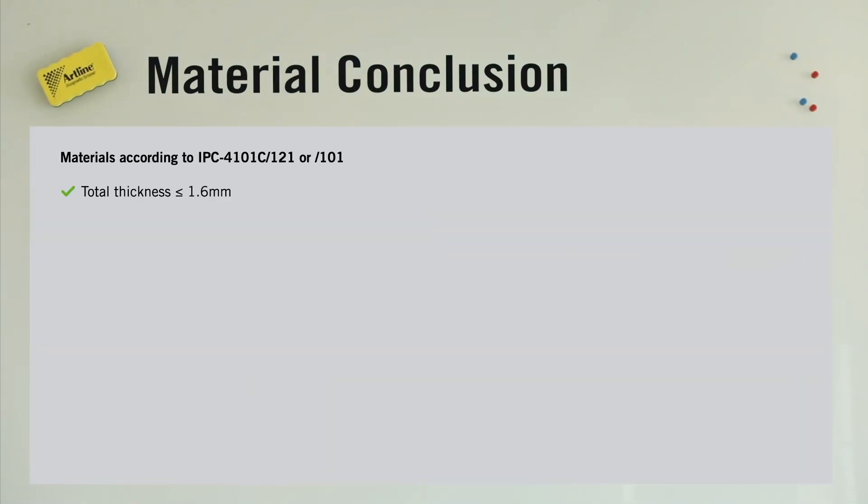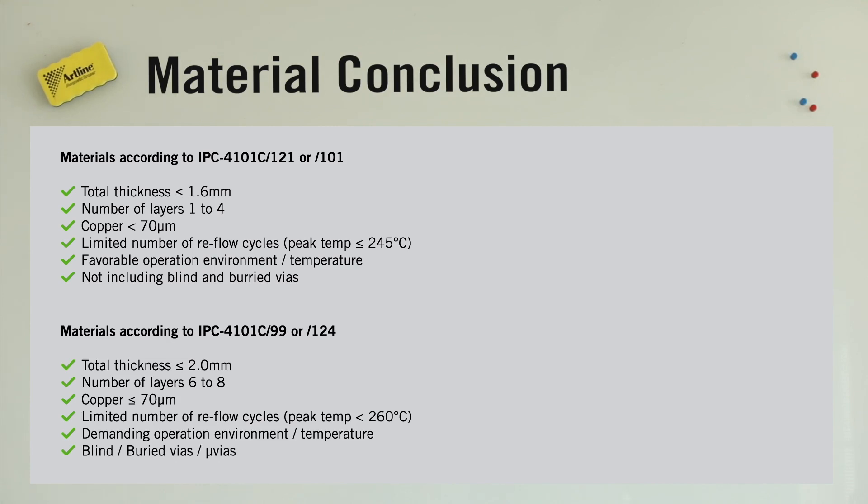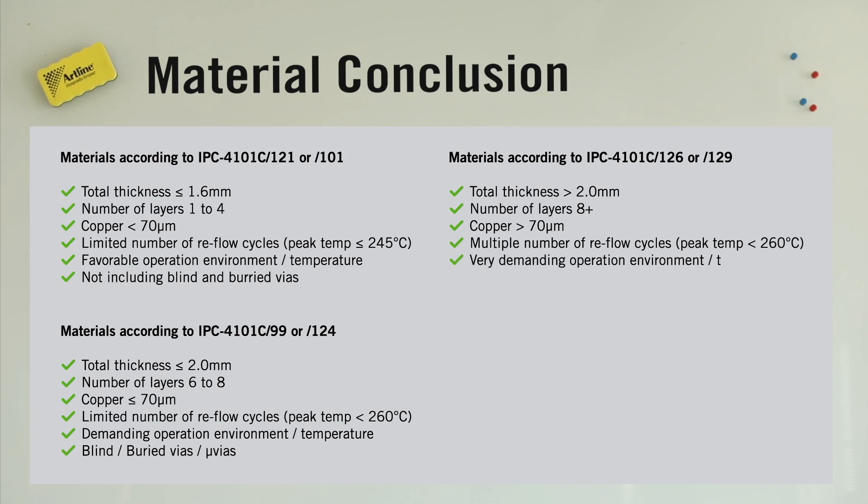Whilst ownership of material selection lies with the customer, the one who truly knows the processes and the demands of the project, NCAB can recommend considering materials that meet the demands of the following IPC 4101 specification sheets, and these are based upon some product and process parameters.